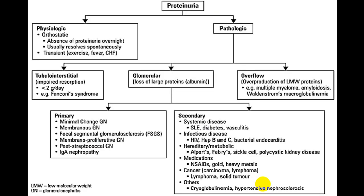Proteinuria can be physiological or pathological. Physiologically, the most common is orthostatic variety, and in transient variety it can occur during exercise or temporarily during fever; in congestive heart failure this disappears and the urine report will be normal on repeat. In pathological variety, the tubulointerstitial classical example is Fanconi syndrome. In glomerular variety it can be primary — glomerulonephritis either nephritic or nephrotic — or secondary due to systemic disorders, infective disorders, hereditary causes, drugs, or malignancy.